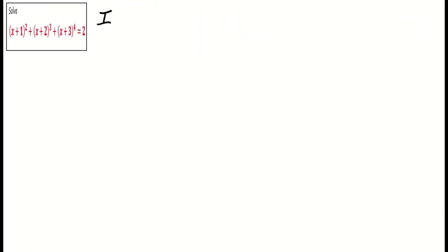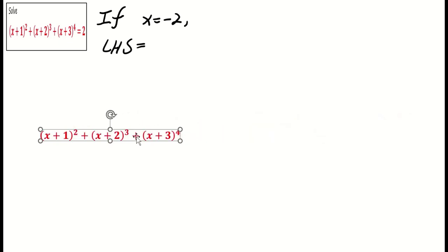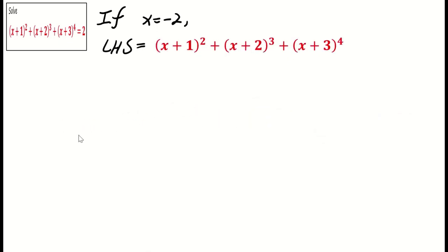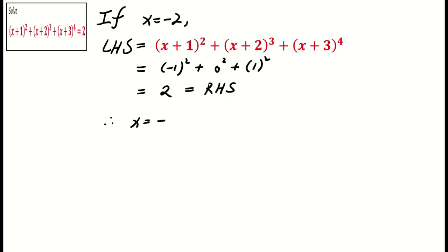If you have a keen sense of numbers, you may try the value of x equals negative 2. In this case, the left hand side of the equation expressed as (x+1)² + (x+2)³ + (x+3)⁴ equals 2, which matches the right hand side. Therefore, x equals negative 2 is a solution.